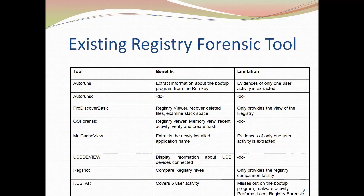In order to gather evidence from the Windows Registry, several tools are available. These include Autoruns and AutorunsC — these tools provide information about autorun programs in the Windows Registry. The difference is that Autoruns does not have a GUI while AutorunsC does have a GUI.